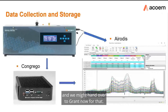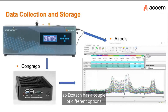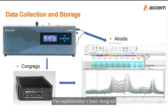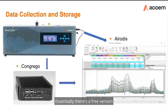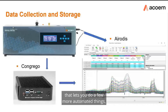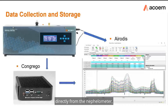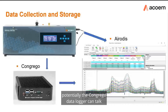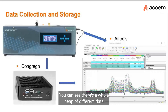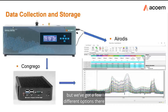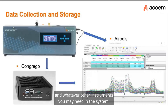A key part of using any instrumentation is collecting and using data. Ecotech's Eridus software can collect data directly from the nephilometer — a free version comes with the instrument, with a more advanced version enabling additional automation. If you have multiple instruments to log, the Congrego data logger can communicate with various nephilometers and feed into Eridus. In the on-screen example, traces from a polar nephilometer show data at many different angles, with intensity increasing with greater total scatter.